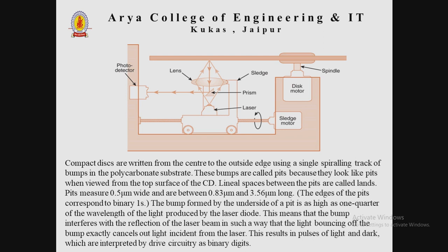You can see from the diagram there is a photo detector, a lens, a sled prism, laser light, a sled motor, a disc motor, and a spindle. Compact disks are written from the center to the outside edge using a single spiraling track of pits in the polycarbonate substrate. These pits are called pits because of how they look when viewed from the top surface of the CD. The linear spaces between the pits are called lands. The distance between adjacent turns of the spiral track — the track pitch — must be at least 1.6 micrometers.